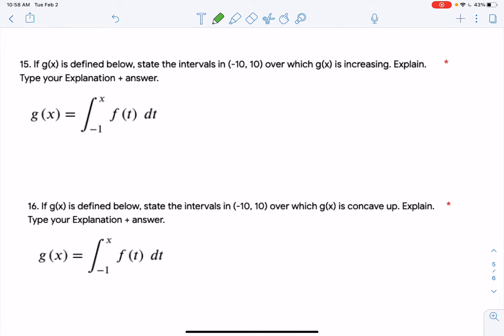All right, let's look at 15. Given that g is defined as the area from negative 1 to x of the f graph, where is g increasing?